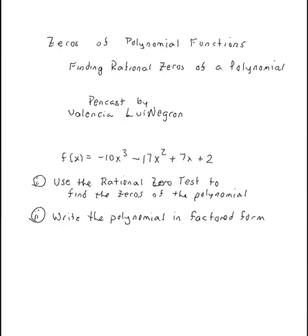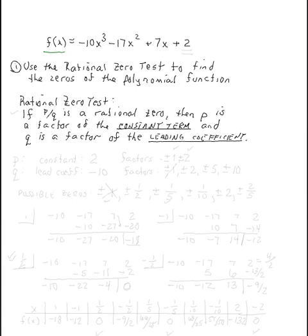We want to take a look at finding rational zeros of a polynomial function. We're going to be using the rational zero test. We have a function f(x) equal to negative 10x³ minus 17x² plus 7x plus 2. The rational zero test tells us if p over q is a rational zero, then p is a factor of the constant term and q is a factor of the leading coefficient.